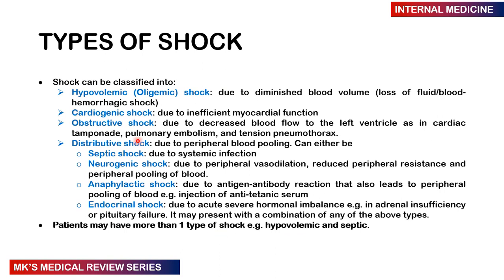Shock can be classified as hypovolemic, cardiogenic, obstructive, and distributive. It's important that you recognize shock first, and the types can be recognized based on clinical features, history, and physical examination. For example, if you are suspecting hypovolemic shock, there may be a history of loss of fluid or blood — through bleeding, diarrhea, or vomiting. You should never miss a patient that is in shock. Hypovolemic or oligemic shock is due to loss of fluid or blood, also called hemorrhagic shock.